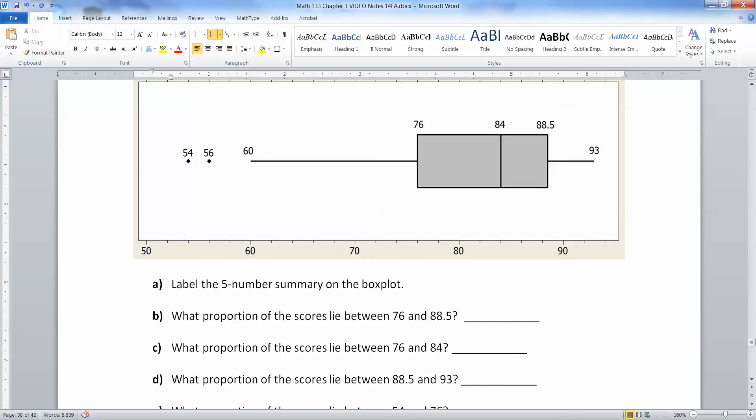Okay. So let's look. 76 and 88. That's the whole box. Well, this is Q1 over here, and this is Q3 over here. So that should be 50%, right? 50% of the data lies in the IQR. That's the whole point about the IQR. So 50% of the data is in that box.